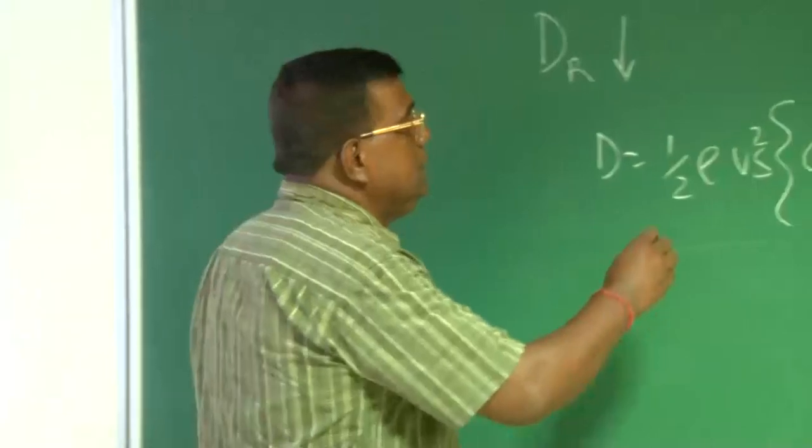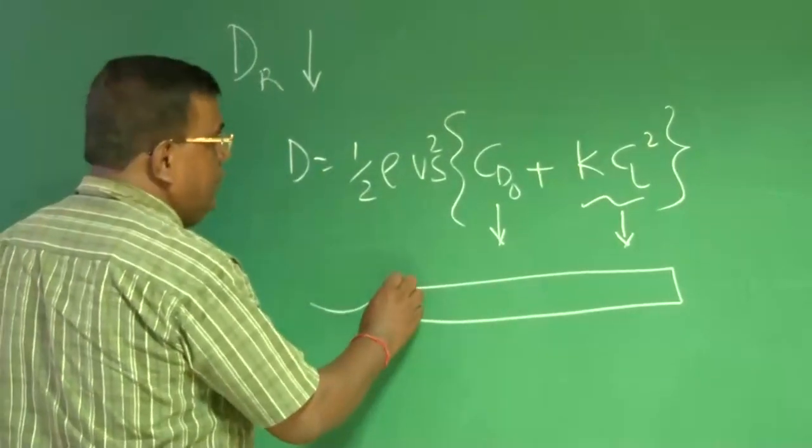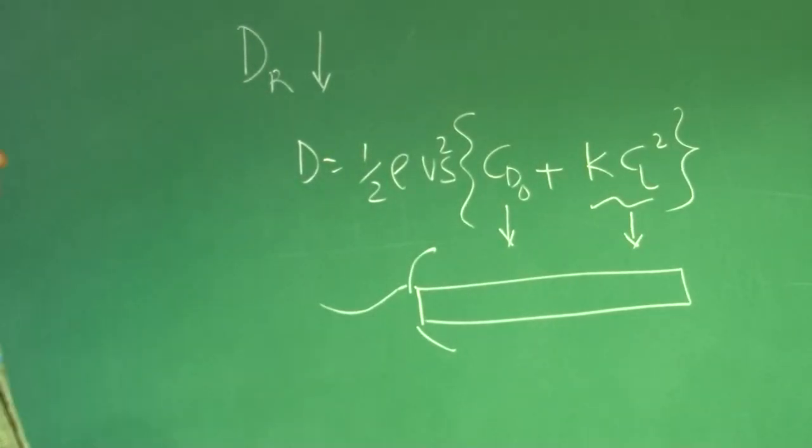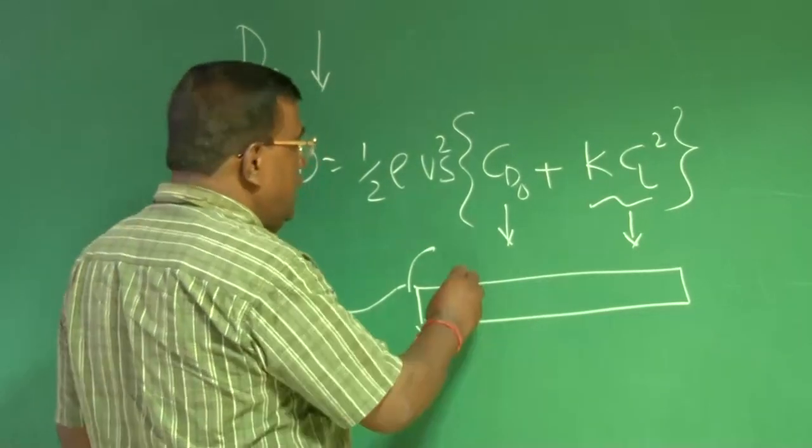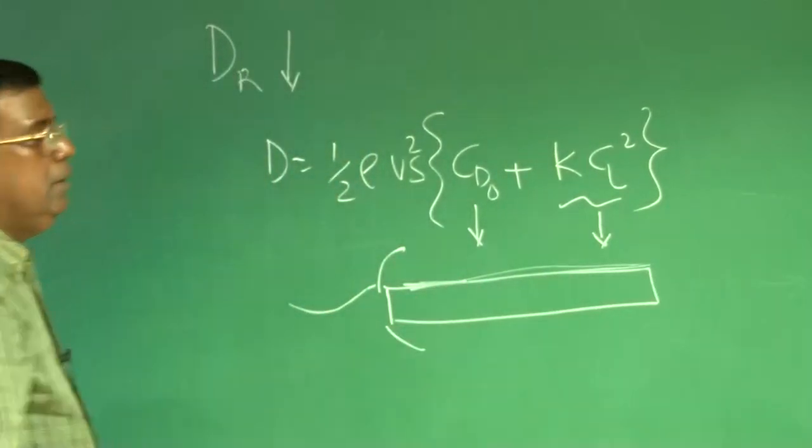And all those things, suppose this cross section is like this and flow is coming like this, lot of losses will be here. Similarly, if there is lot of roughness is here, that will lead to skin friction drag.